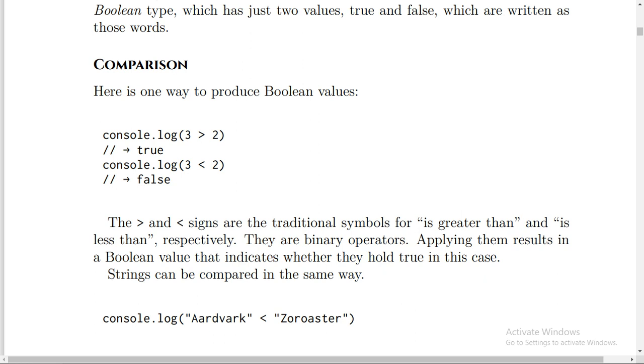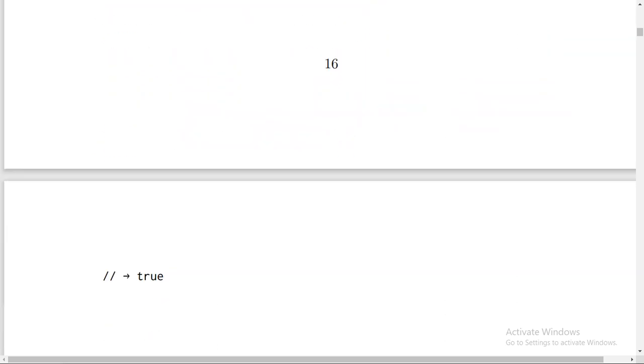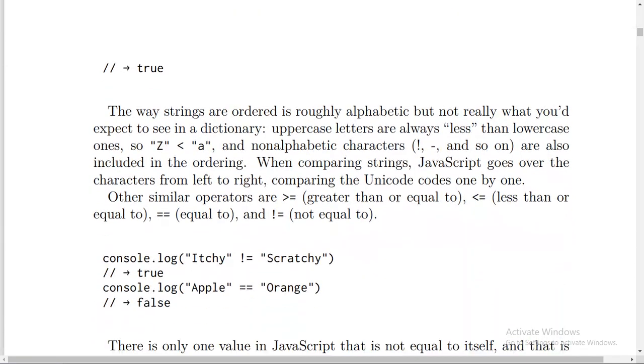Strings can be compared in the same way. Console.log("Aardvark" < "Zoroaster"). This is true. The way strings are ordered is roughly alphabetic, but not really what you would expect to see in a dictionary.